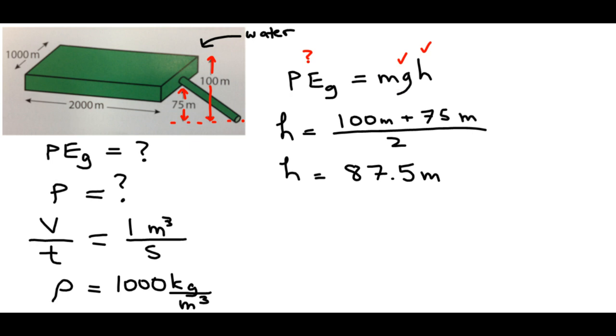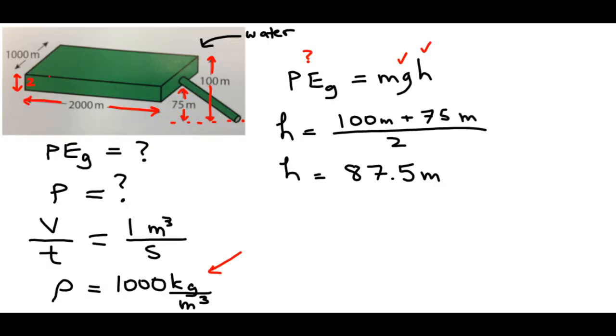Now, we are given the density. And we also can find the volume of the water element, because we know all of the dimensions. This is 2,000. The water's height is going to be 100 minus 75. This minus this gives us the height. So this height is 25 meters, and we know the width, 1,000. So we know the volume. We know the density. We can easily find the mass.